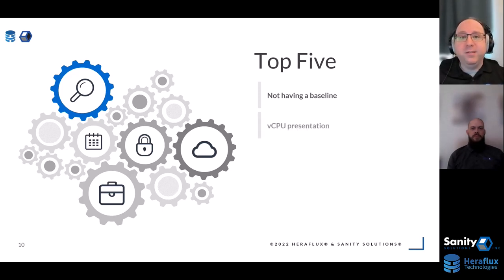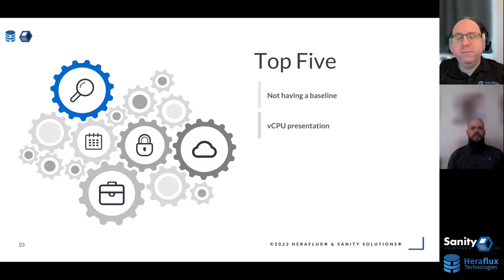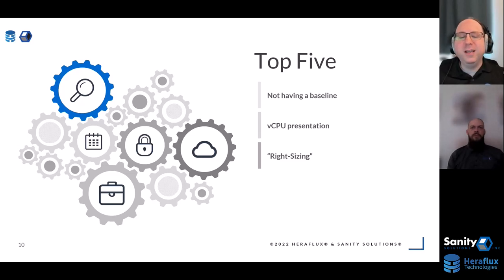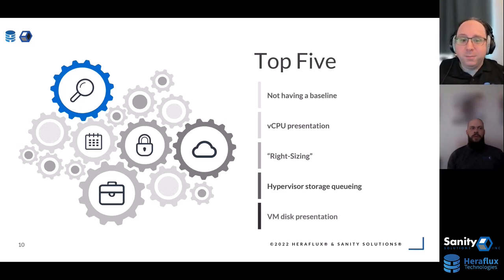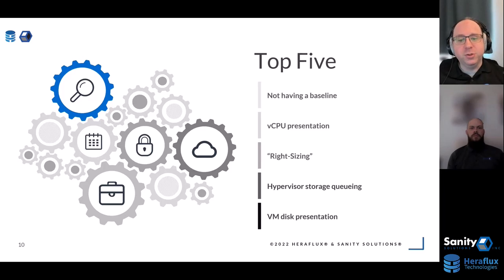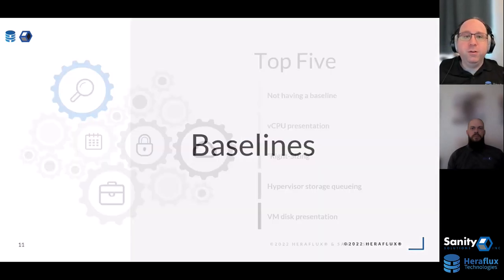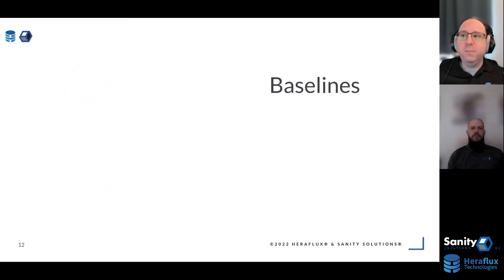The five items are: first, not having a baseline; second, virtual CPU presentation — assigning virtual CPUs and making sure the database aligns with the virtual and physical machine; third, right-sizing, which goes into licensing and performance; fourth, hypervisor storage queuing — applies both cloud and on-prem; and fifth, assigning virtual disks to the virtual machine and making sure the SQL Server workload lines up properly with how the disks have been presented and mapped.